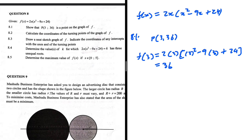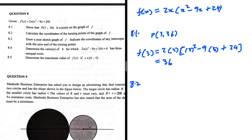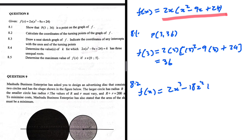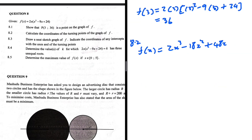Question 8.2: calculate the coordinates of the turning points of the graph of f. At turning points the gradient equals zero, so we need to differentiate. First we expand by multiplying out the 2x: f(x) = 2x³ - 18x² + 48x, so we can use the power rule.